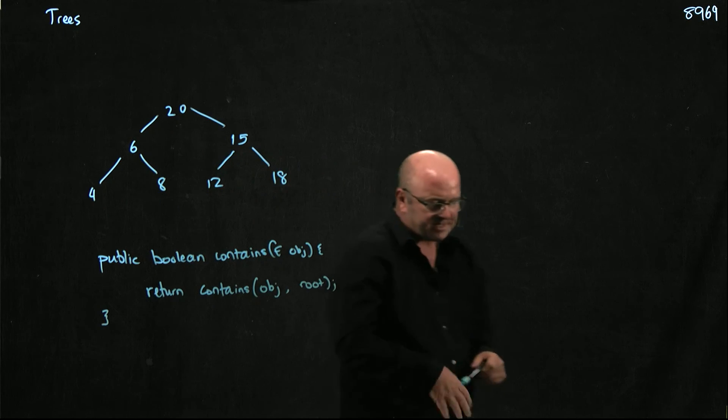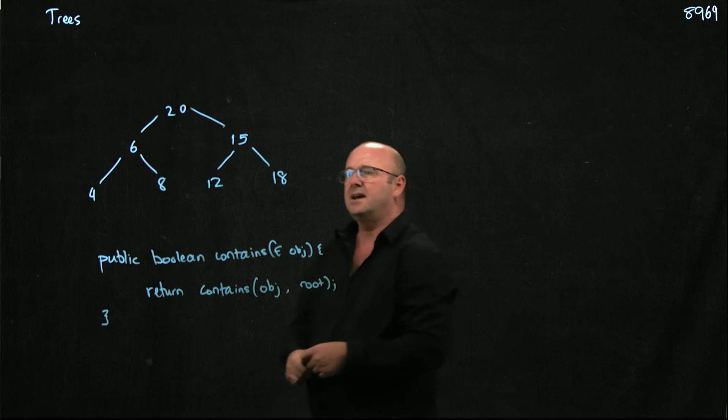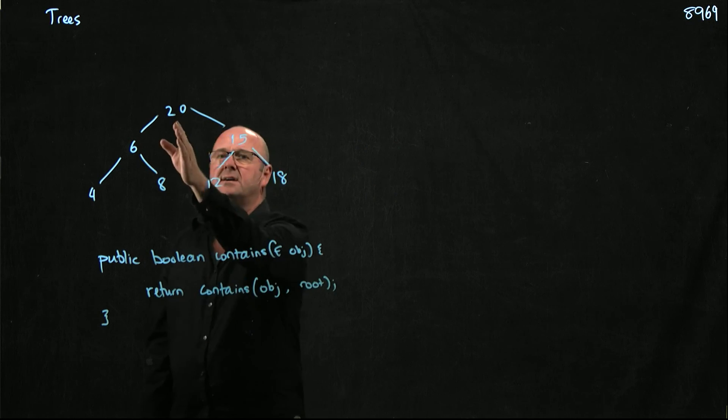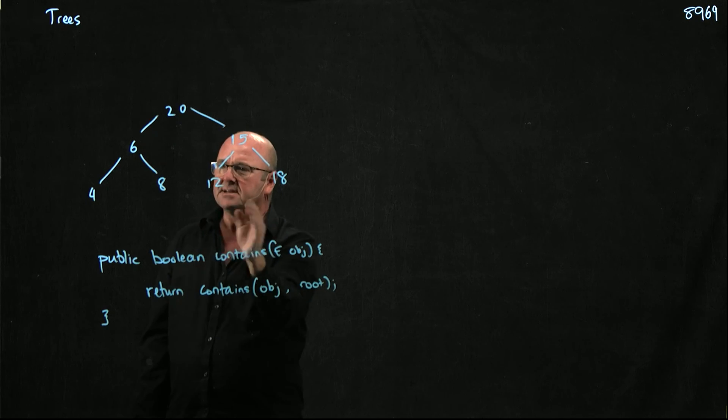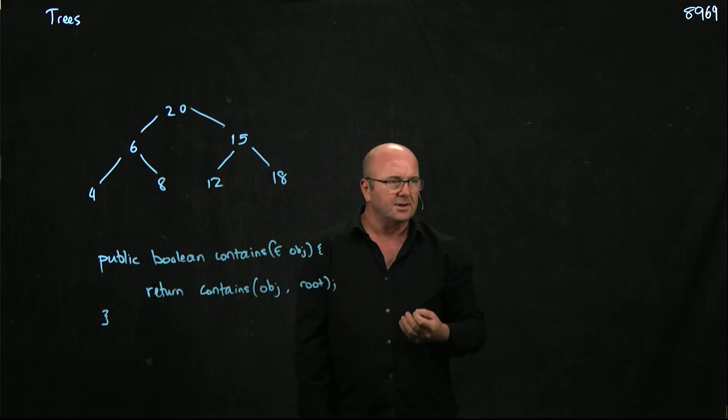Because if we want to know if our tree contains something, what we want to do is start at the root and say, is what we're looking for bigger than the root or smaller than the root? If it's bigger, we go to the right. If it's smaller, we go to the left. Bigger, smaller, bigger, smaller, until we get to null. If we get to a null, it's not there.